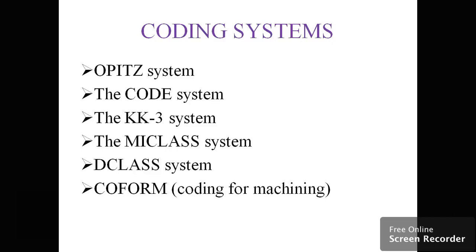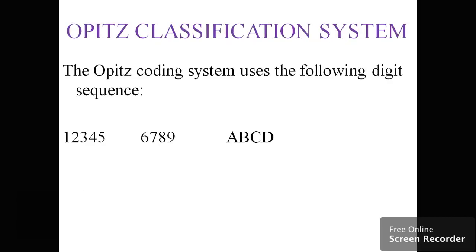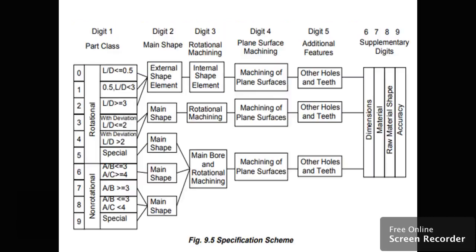In our syllabus, we cover OPITZ and MICLASS only. This is the OPITZ coding system, which has nine digits for all properties. We're going to see how the first nine digits work.